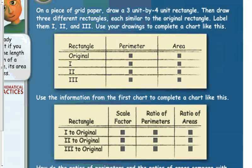Let's look at an example. It says on a piece of grid paper, draw a 3 by 4 unit rectangle, then draw three different rectangles each similar to the original and label them 1, 2, and 3. So figure 1 would be a 3 by 4, figure 2 would be double size at 6 by 8, and figure 3 would be 9 by 12.